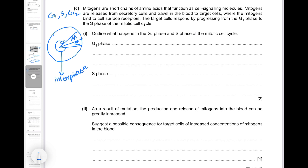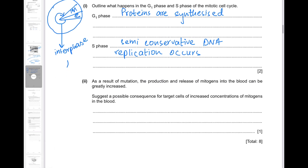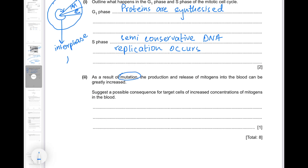In G1 phase the cell will grow, for example by producing proteins and increasing in size. During S phase you've got semi-conservative replication of DNA. As a result of mutation, the production and release of mitogens into the blood can be greatly increased. Since mitogens cause cells to progress from G1 phase to S phase, the mitotic cell cycle would be sped up, increasing the rate of cell division. This mutation which increases mitogens will increase mitosis, which can also lead to forming a tumor.